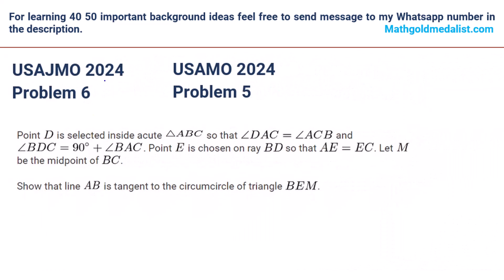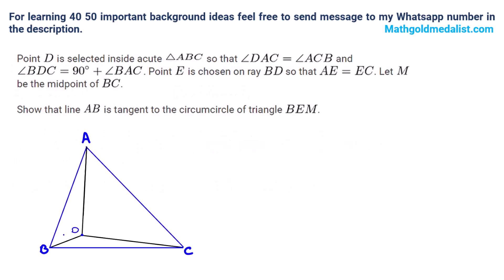This is a common problem in JMO 2024 and AMO 2024. It says point D is selected inside acute triangle ABC so that angle DAC is equal to angle ACB. So DAC is equal to ACB, which we can call angle C, and angle BDC is 90 plus BAC, or 90 plus A.